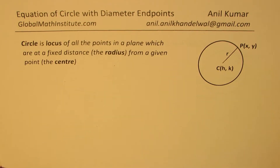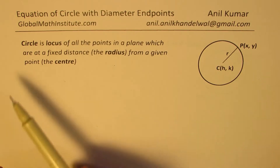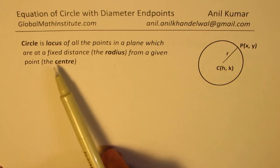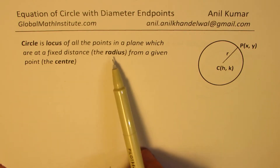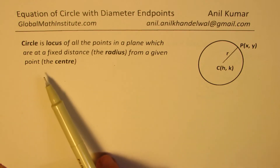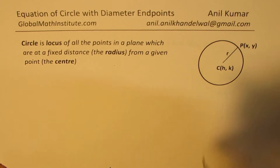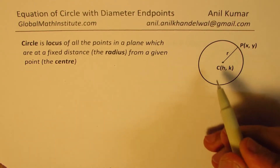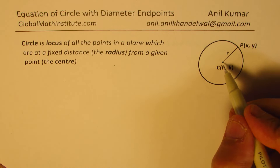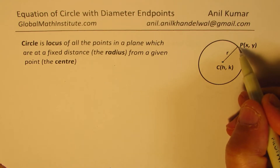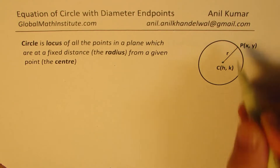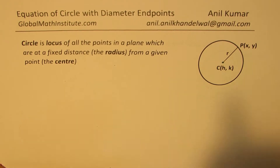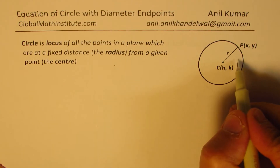Let's begin with the very basic concept. A circle is the locus of all points in a plane which are at a fixed distance — the radius — from a given point, the center. Here we have a circle with center marked as C. The radius is the distance from the center to a point on the periphery of the circle.